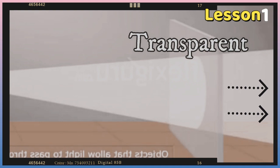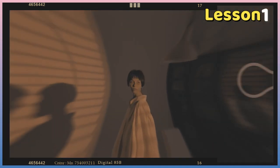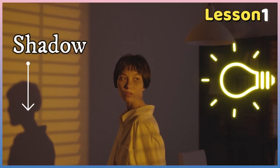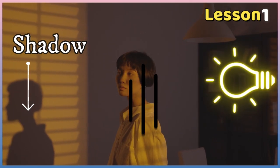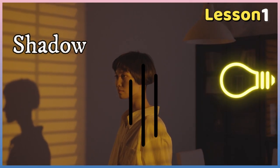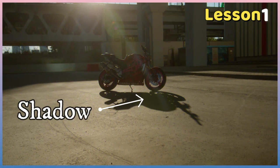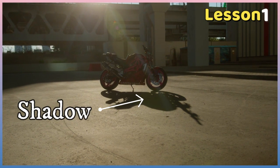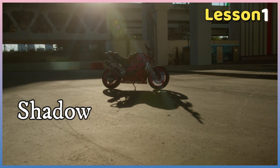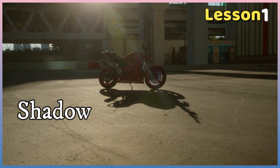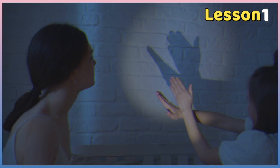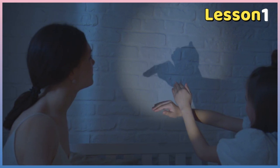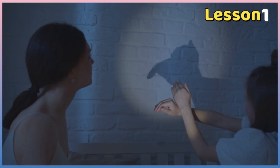Why do we see shadows? Opaque objects, including the human body, always form shadows in the presence of light. A shadow happens because all the light that hits the body either bounces off or is absorbed, so none of the light passes through. Try this trick at home to understand what a shadow is.